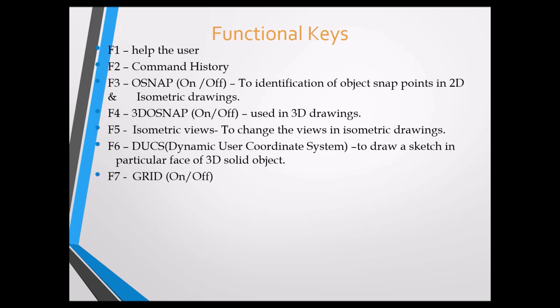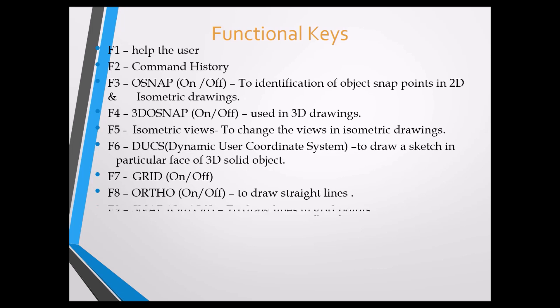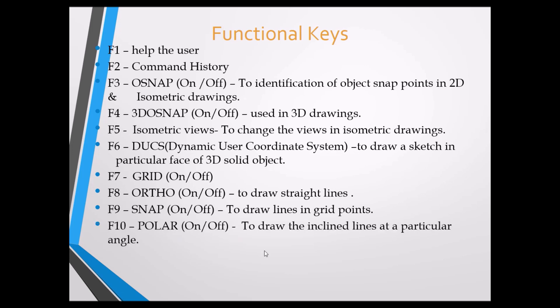F7 toggles Grid on or off — the grid is a mesh-type overlay visible in the workspace background. F8 is Ortho on or off, used to draw completely straight lines — horizontal and vertical perpendicular lines only. F9 is Snap on or off — if there is a grid in the workspace and you want to draw along specific grid lines, this key is used. F10 is Polar on or off, used to draw inclined lines at a particular angle.